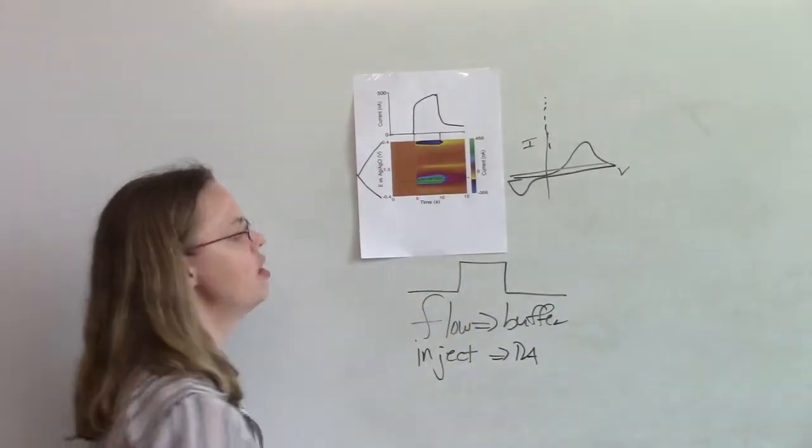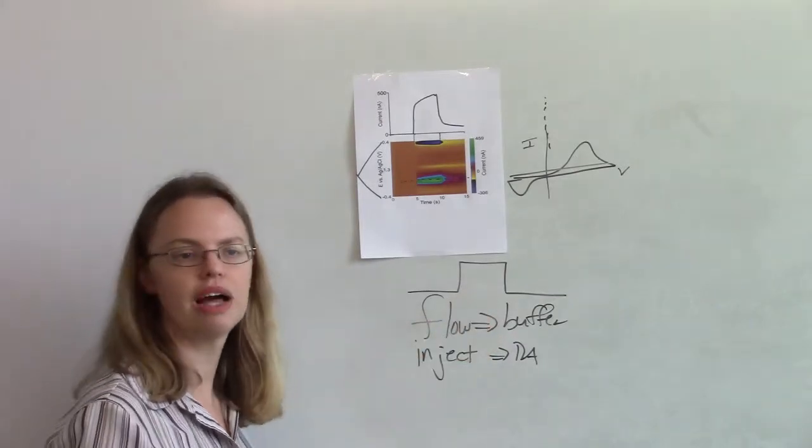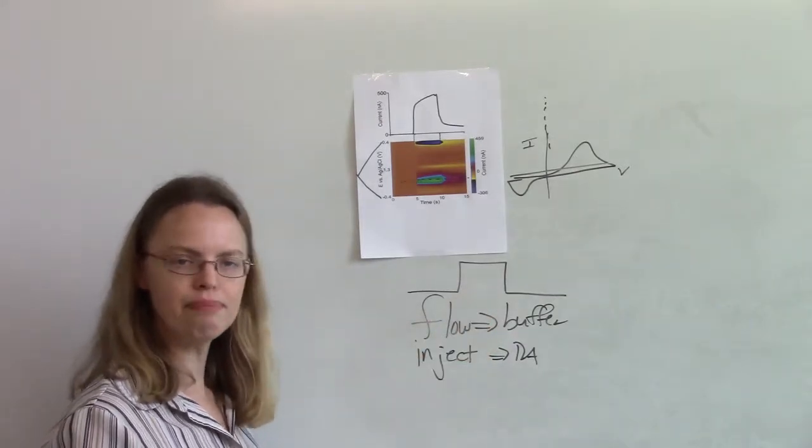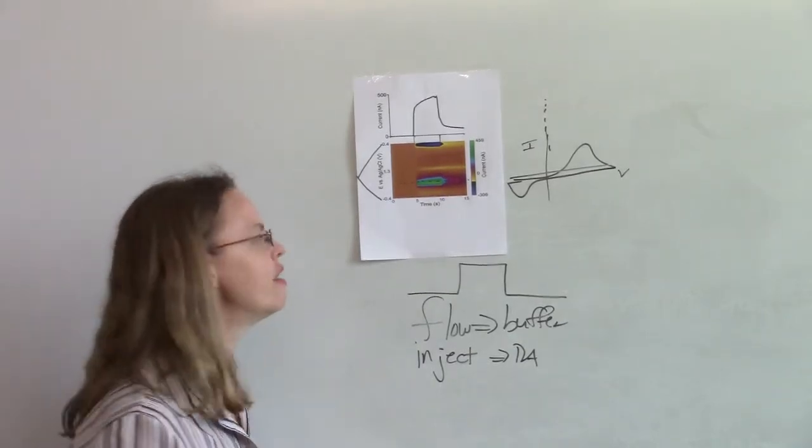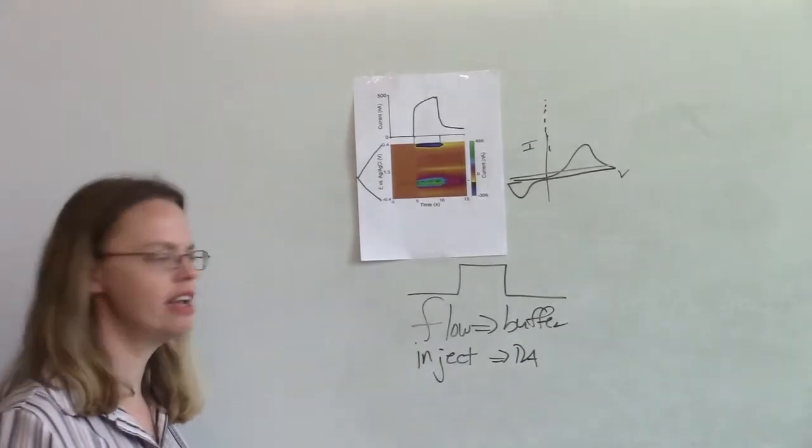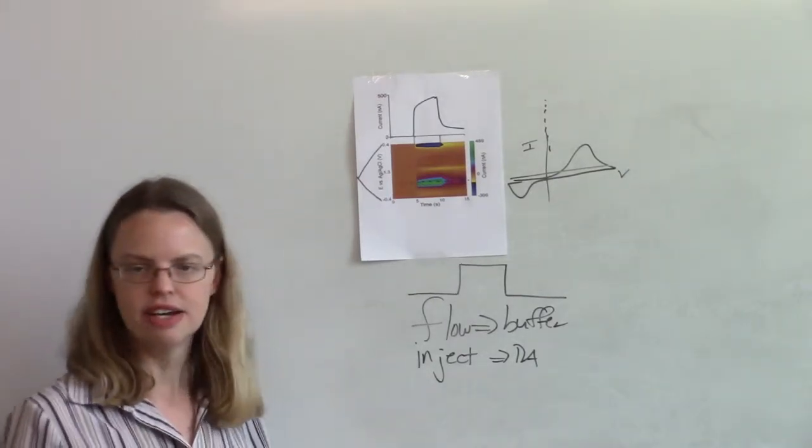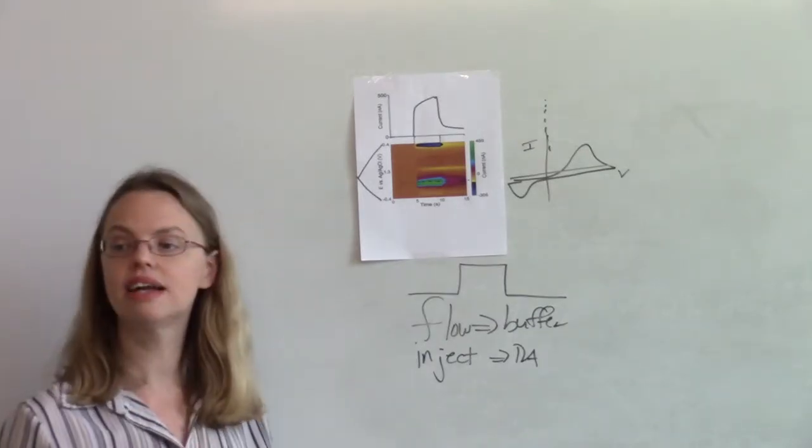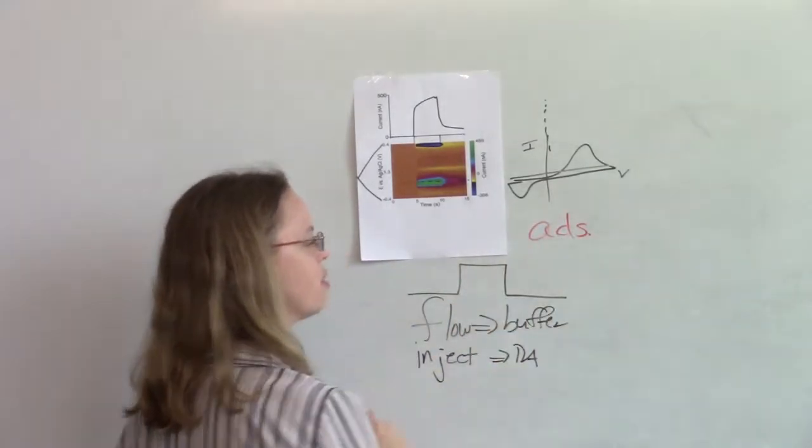And again, the first thing you should notice is that it wasn't my beautiful square that I told you I thought it should be. It's not bad, but it's not perfect. And so the answer to this, as I said, about half of what happens with FSCV is adsorption. Like why is it not square? The answer is adsorption.